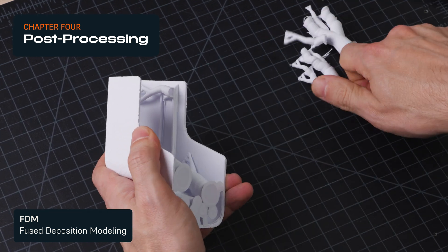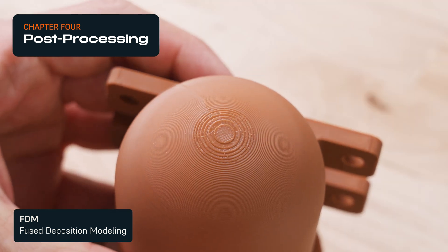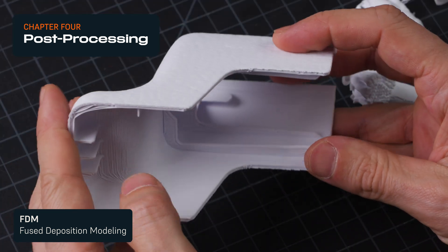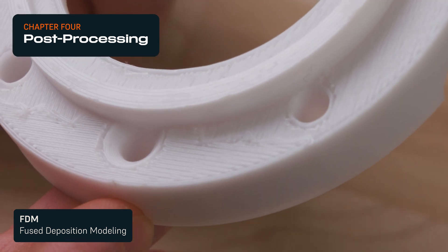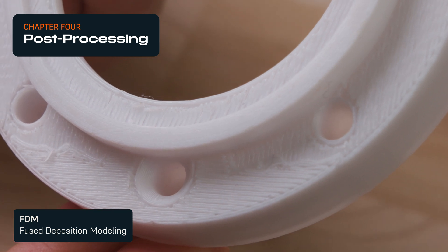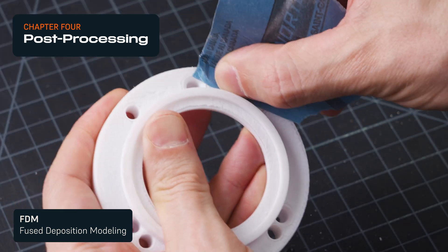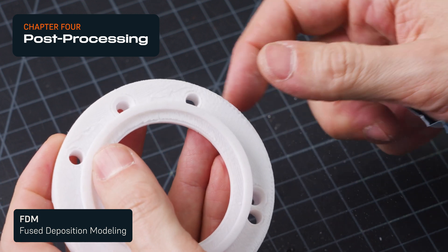FDM parts often exhibit clearly defined layer lines and support marks where the supports came in contact with the parts. Fixing these blemishes requires extensive sanding or smoothing, which can add significant time and overall hands-on labor, making it hard to achieve consistent results and reducing throughput.